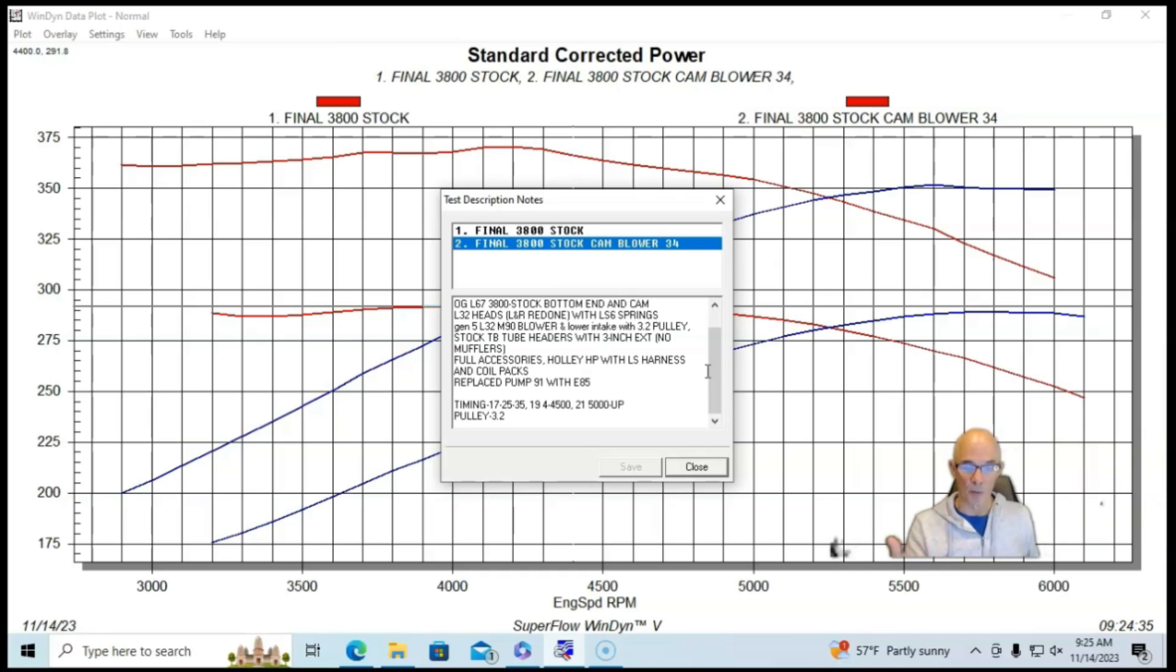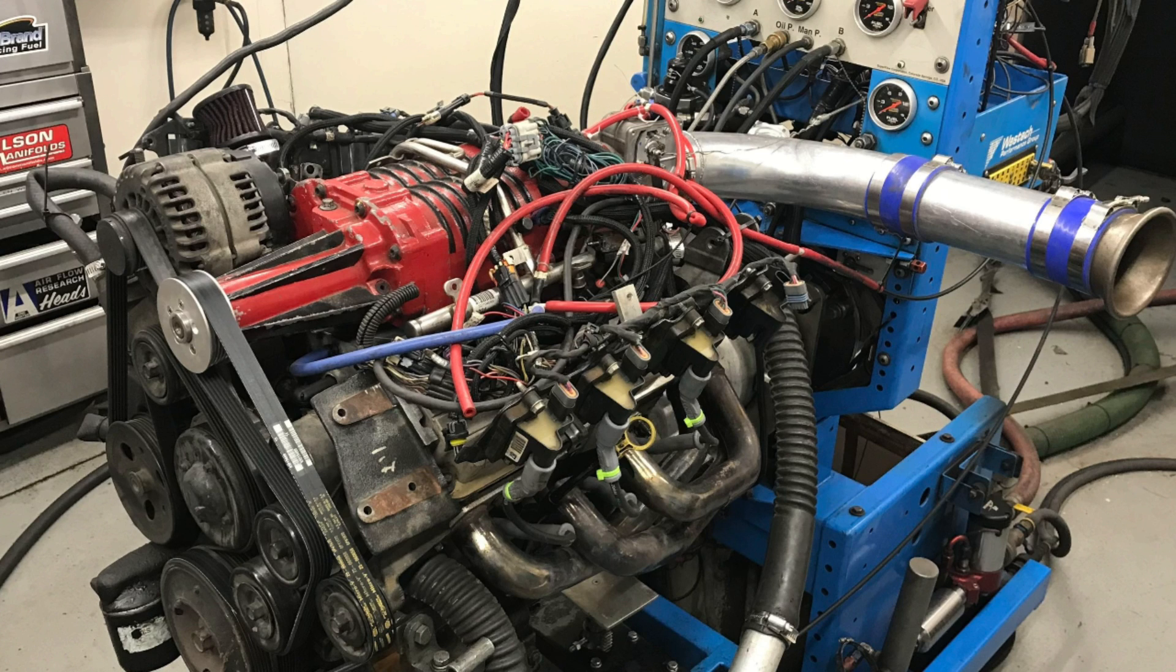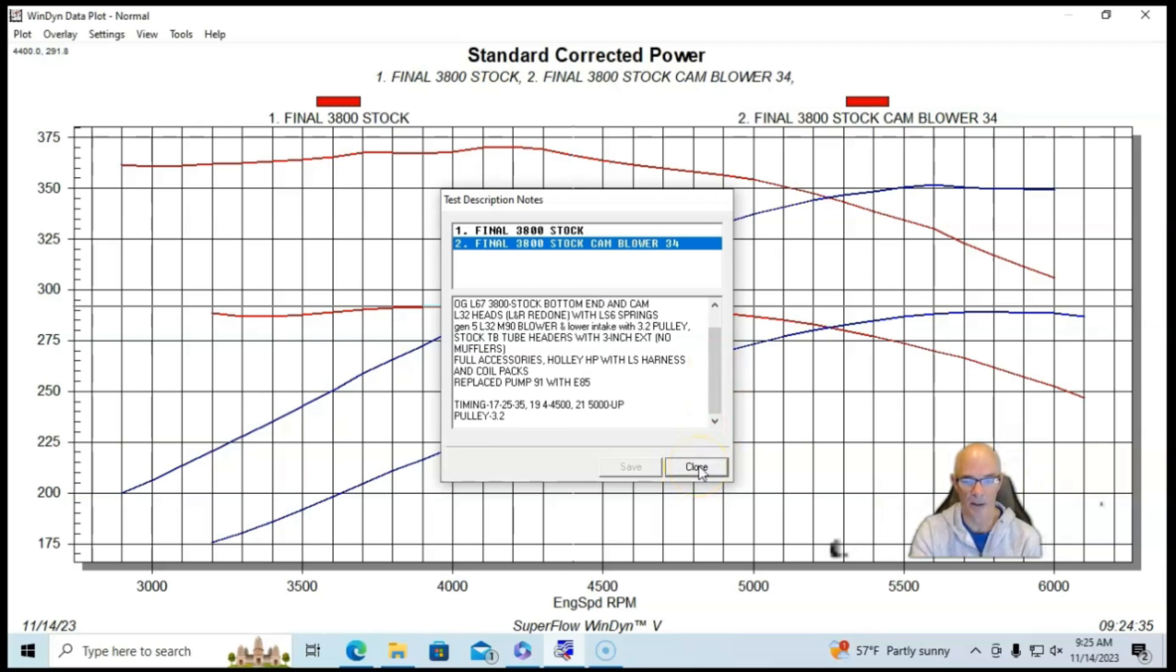We also put LS6 valve springs on it because we were going to be putting camshafts in this thing. Right now it had a stock camshaft in it still, so basically this was an upgrade on the cylinder heads. We just repaired them so they weren't leaking and then we put the valve springs on it and then the 3.2 inch pulley.